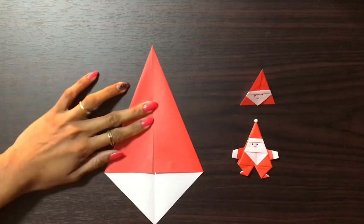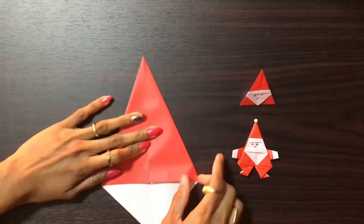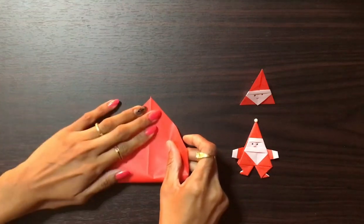This is called kite base. Bring this tip to this tip and make a crease.